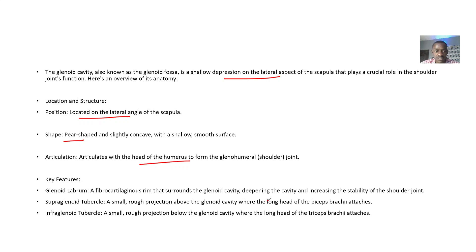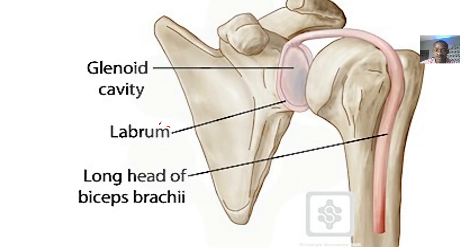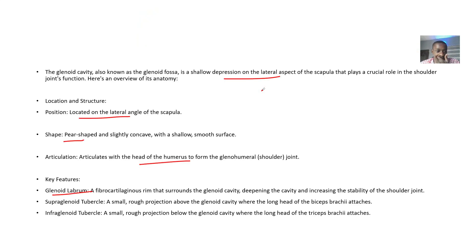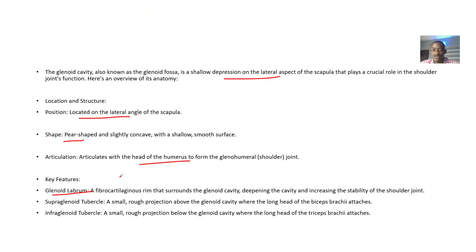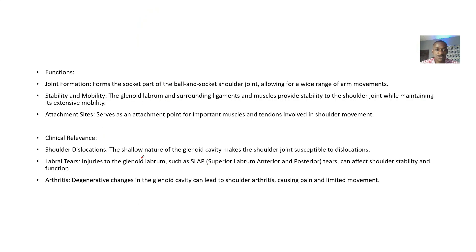The key features of this glenoid cavity include the glenoid labrum — a fibrocartilaginous rim that surrounds the glenoid cavity, which further deepens it. There is also the supraglenoid tubercle; there is a separate video covering the anatomy of the supraglenoid and infraglenoid tubercle.